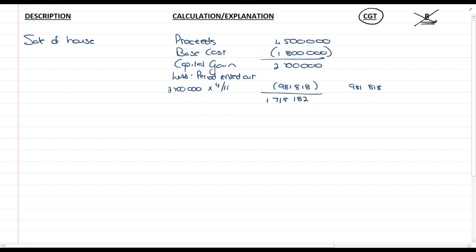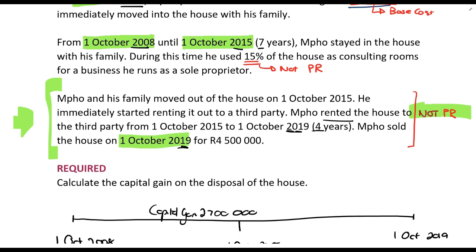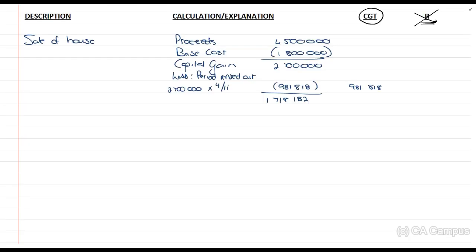A lot of students will ask: why are you even doing a primary residence calculation, since when he sold this on the 1st of October 2019 he was not using it as a primary residence? The phrase 'you can only have one primary residence at a time' is misunderstood. It means that for the period 1 October 2008 to 1 October 2015, when he called part of that house his primary residence, he could only have that one house as his primary residence. It does not mean that when you sold it, it had to be a primary residence at the time of sale. If you used any asset at any point as a primary residence, that portion can qualify for the primary residence exclusion, as long as it happened after 1 October 2001 and you were subject to CGT at that point in time.